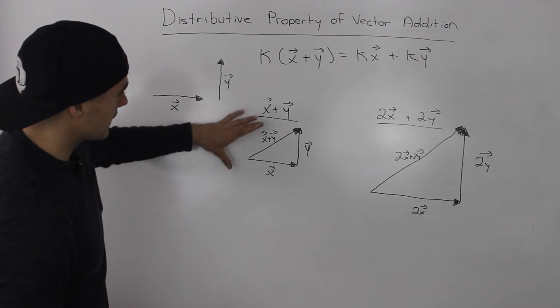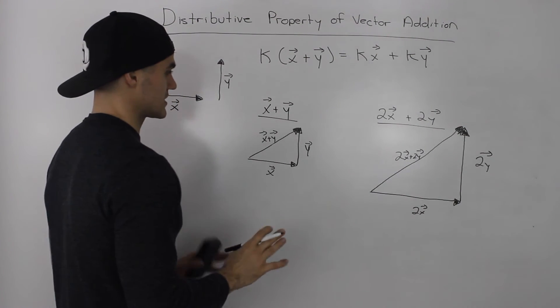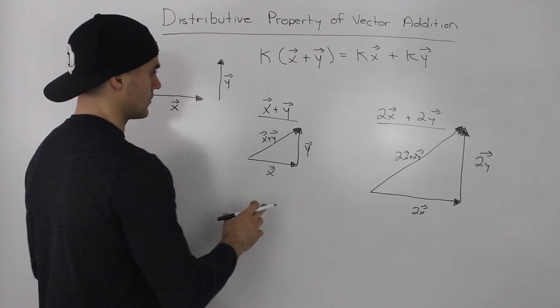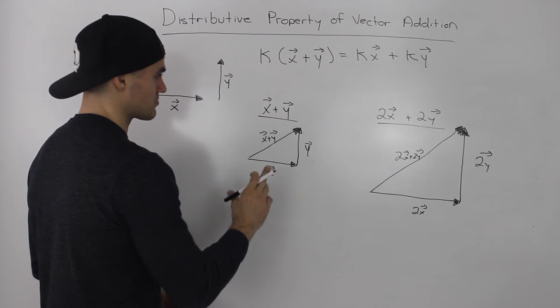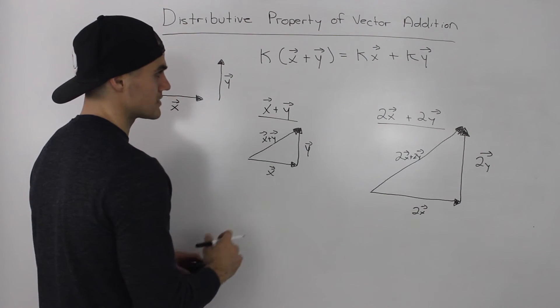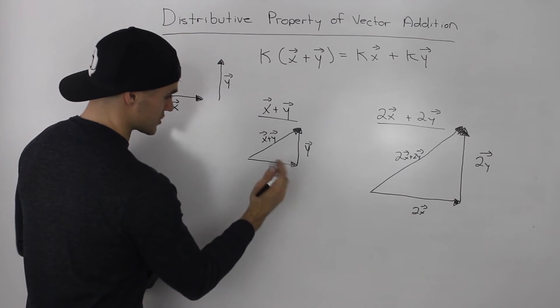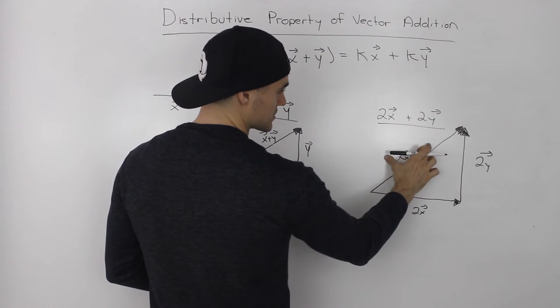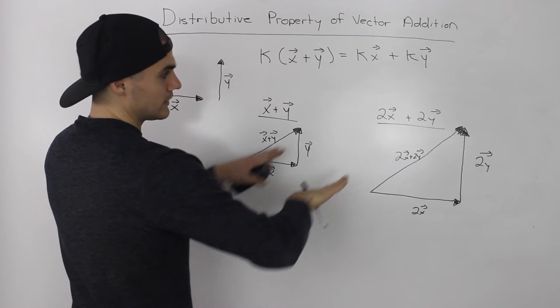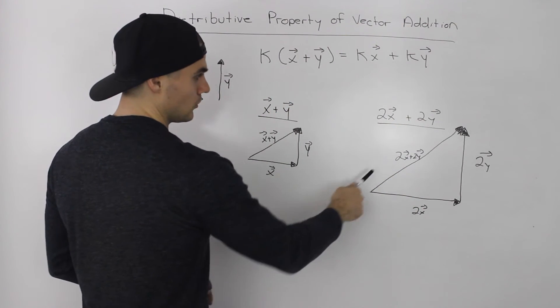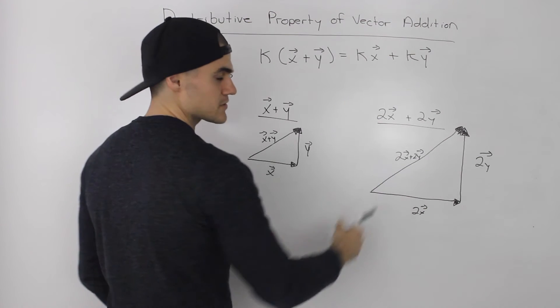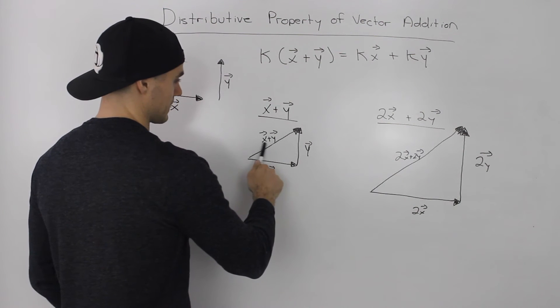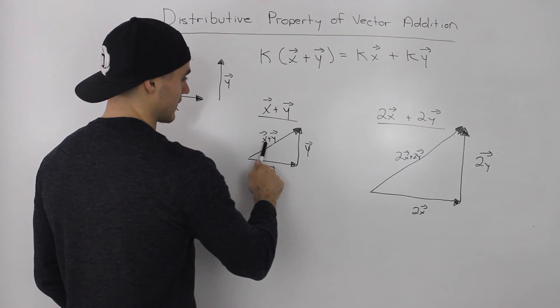Now if you took these vectors, assuming that you draw everything to scale, when you're drawing this on your paper it's probably best to use a ruler so you can make sure it's properly to scale because it's important in this proof. But if you took the resultant x plus y and put it side by side with the resultant 2x plus 2y, they're going in the same direction and you'll notice that the resultant 2x plus 2y is double the magnitude of the vector x plus y.